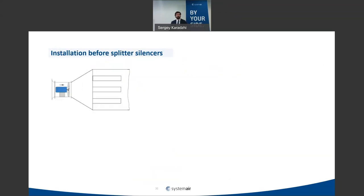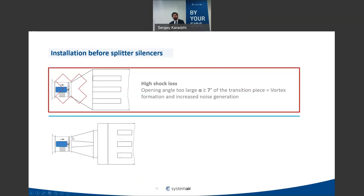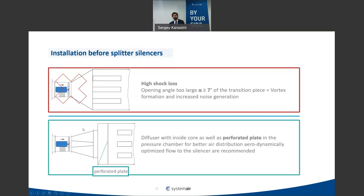Installation before a splitter silencer: if the opening angle before the silencer is greater than 7 degrees, you will have flow separation and high losses, and the sound direction will not be as expected. Always use small angles — less than 7 degrees — and a perforated plate to make the velocity profile more uniform.